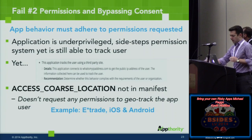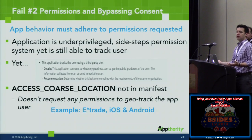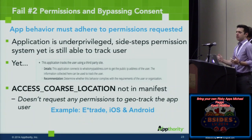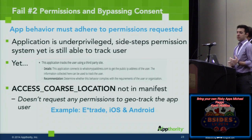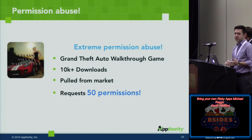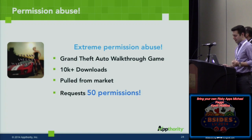A lot of applications don't have permission for location tracking. To use GPS, both Apple and Google require you to notify the user. But apps found ways to track location based on GeoIP, Wi-Fi, or cell phone triangulation. In the example of ETrade for iOS and Android, even without GPS permission granted, they can still know where you are based on your mobile IP address — no permission given, behavior still there. Another quick example of permission abuse: a GTA walkthrough app had over 10,000 downloads before it was pulled, yet it requested over 50 permissions.